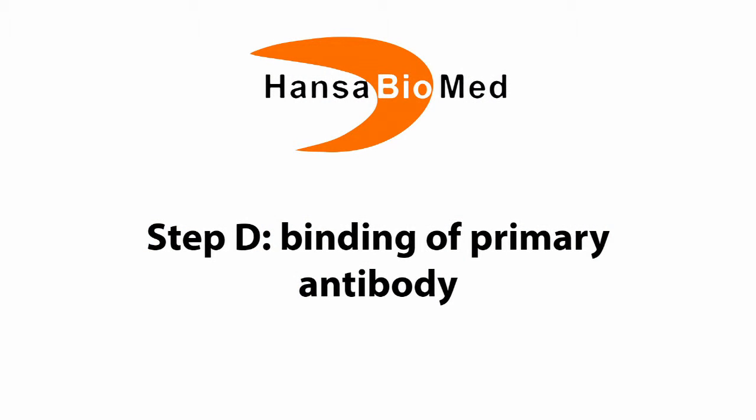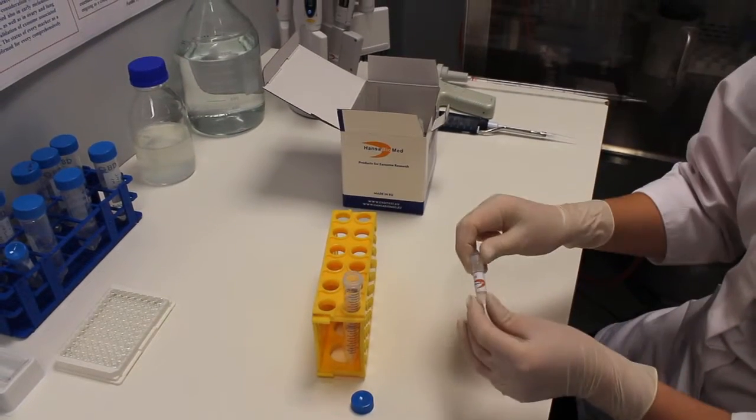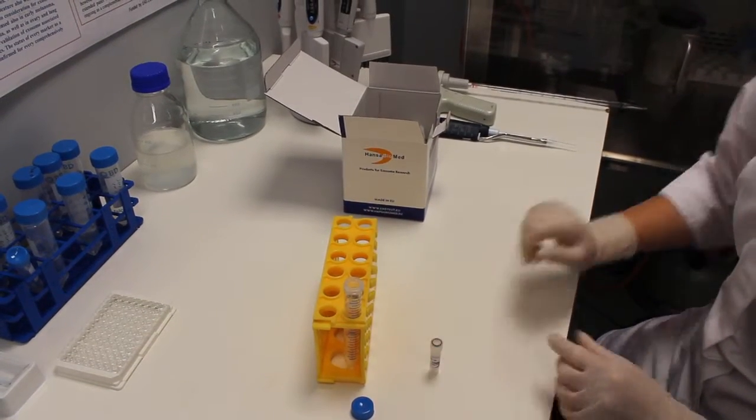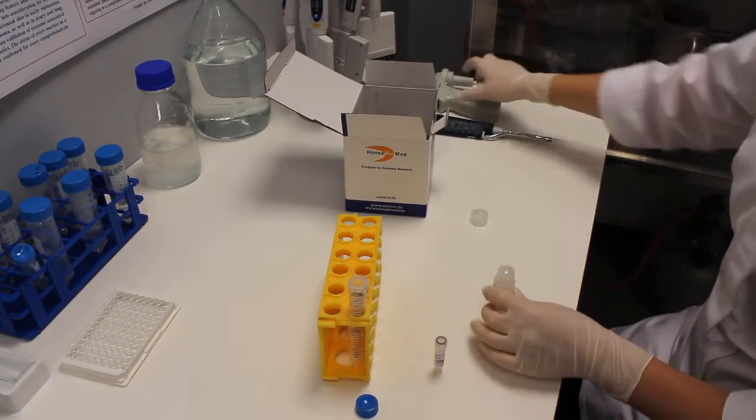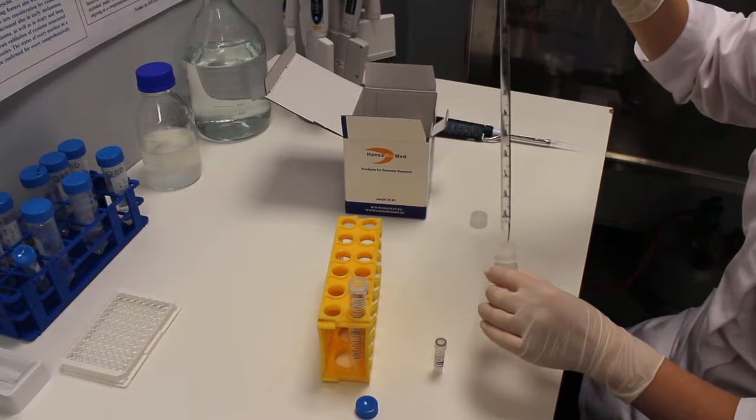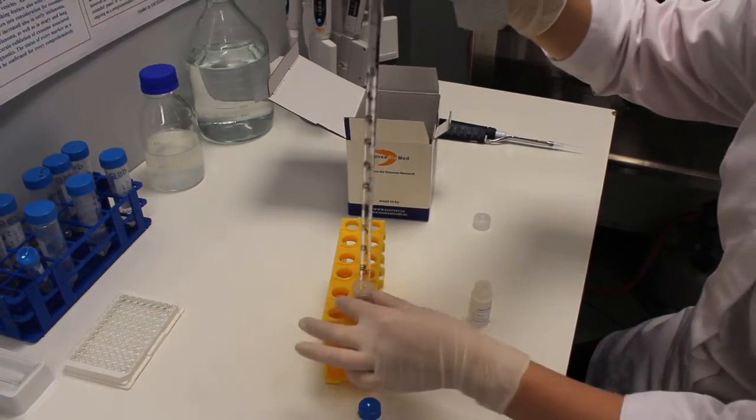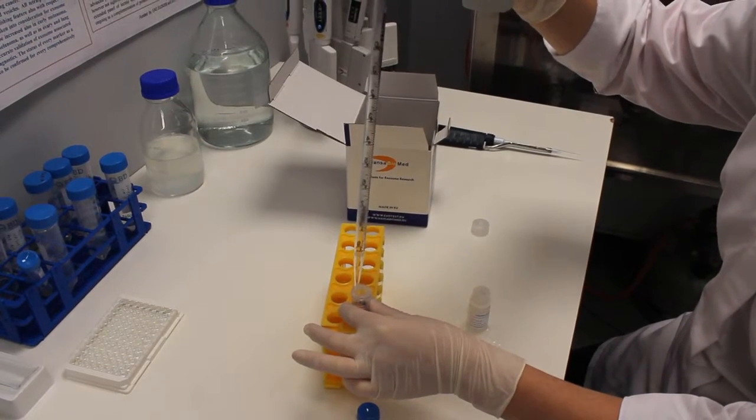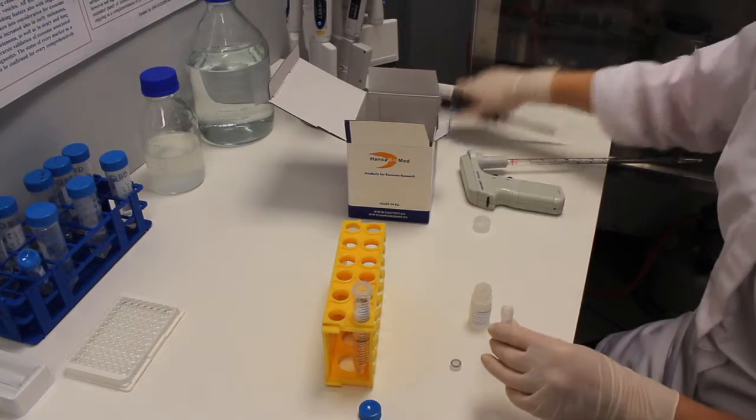Step D: Binding of primary antibody. We need to dilute primary antibody 500 times. To do this, we take 10 ml of sample buffer and add 20 microliters of primary antibody.